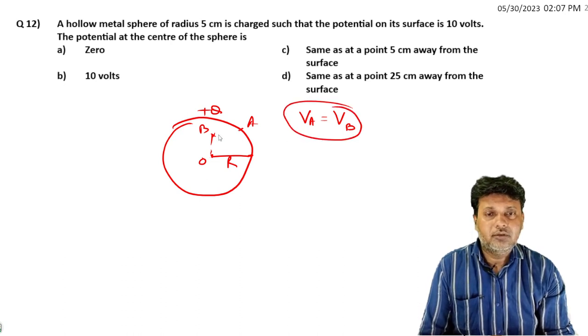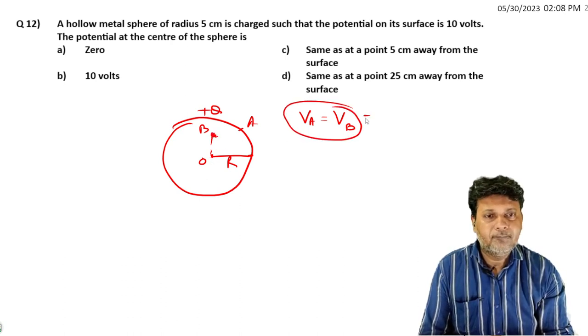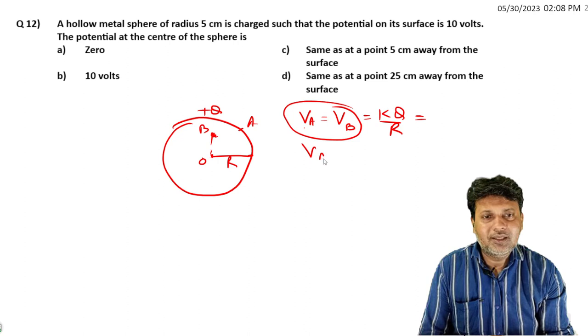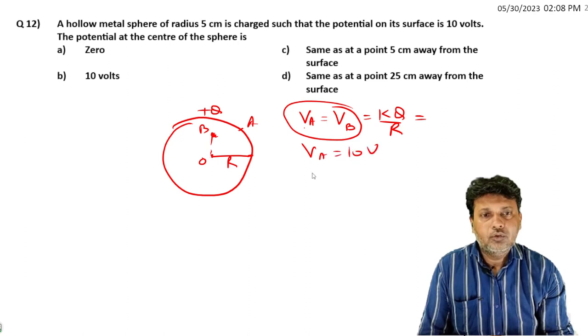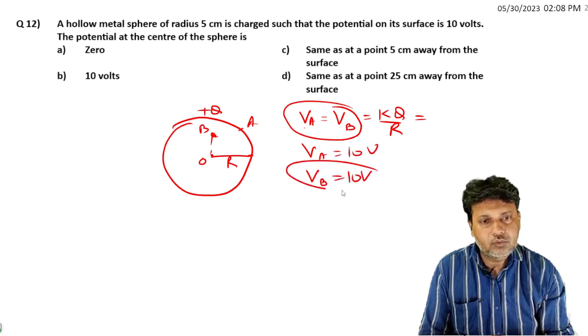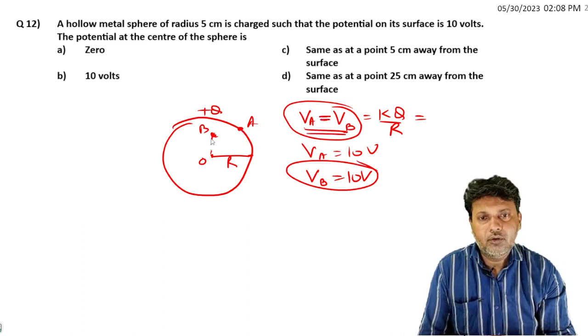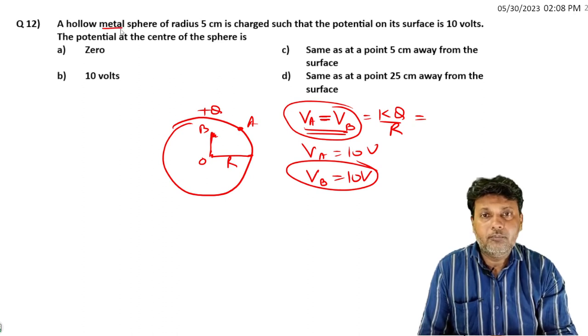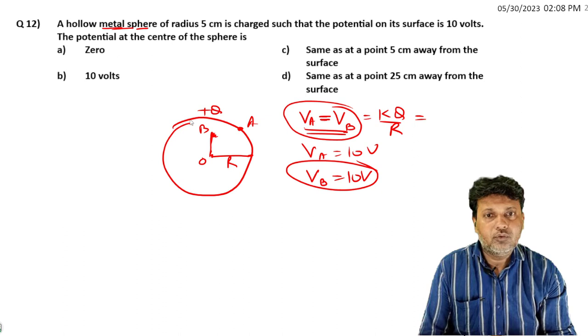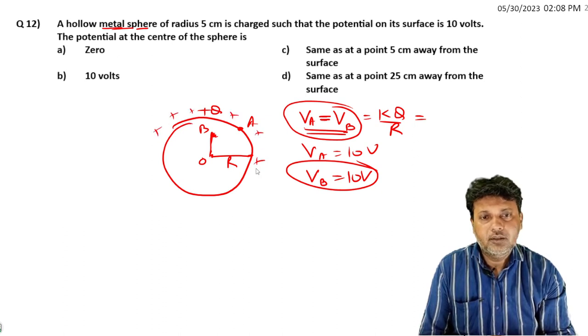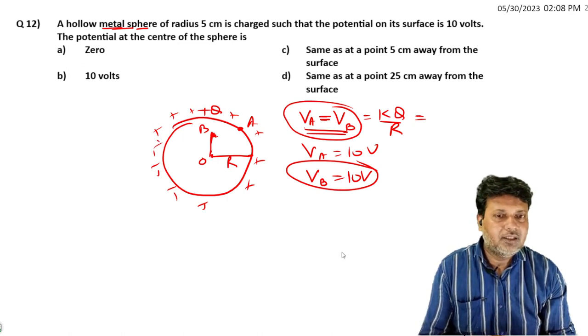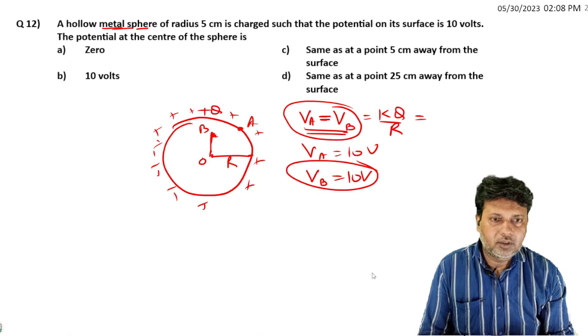The value at a point, the potential. The surface or under, metal case. The potential at the center, the same at the surface and under. Even at the center, the potential is the same. Next question.